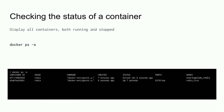You can view stopped containers using `docker ps -a`. For example, if you had two Redis instances and stopped one, you'll see one showing 'exited 6 seconds ago' and the other showing it's been 'up for 7 seconds'. That's how `docker ps` works.